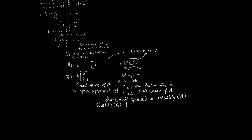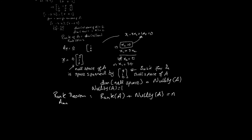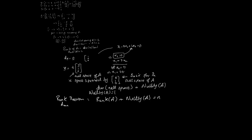The rank theorem states that for any M by N matrix A, the rank of A plus the nullity of A is equal to N, which is the number of columns of A. The number of columns tells us the number of variables in the linear system of equations. In this example, the rank of A is 2, the nullity of A is 1, and the number of columns of A is 3 — so rank plus nullity equals 3, and the rank theorem holds.